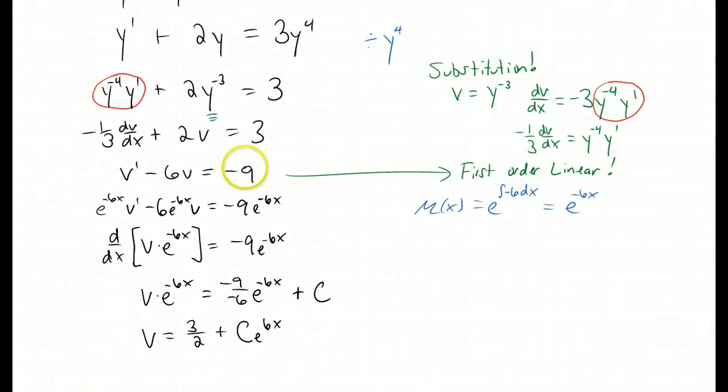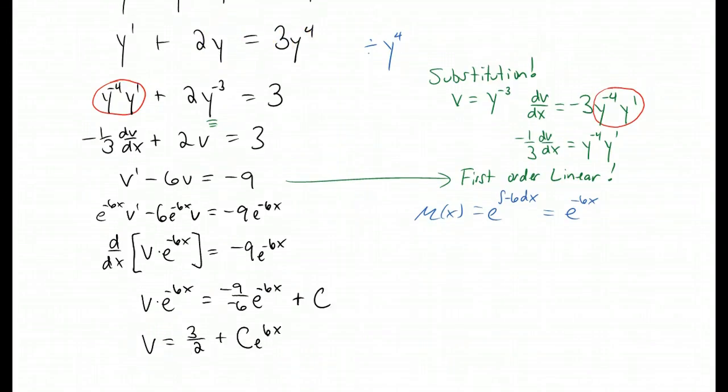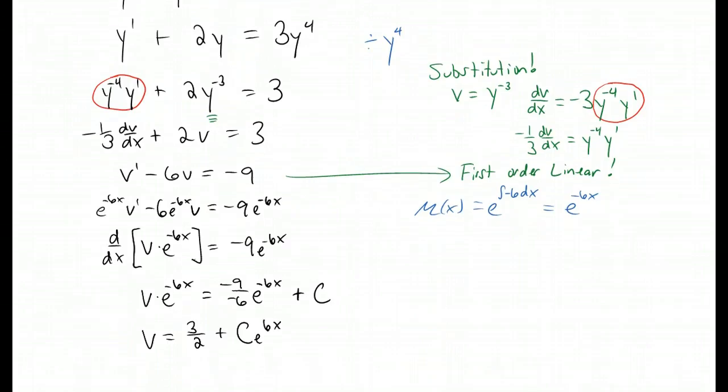If this problem started off as a first order linear differential equation we would be finished at this point. However, it started off as a Bernoulli equation and the dependent variable we're trying to solve for is y. We found v. We need to substitute back in for what v is. v is y to the negative third power. Now all we have to do to solve for y is raise both sides of the equation to the negative one third power.